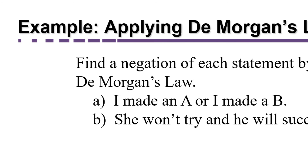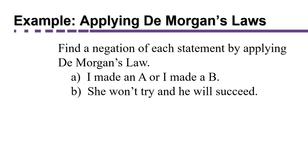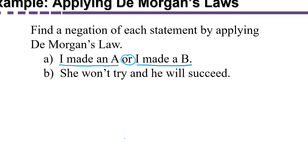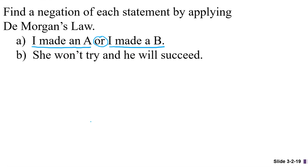So in a way we're not learning something new. We're just rewriting the set theory DeMorgan's laws in logic notation. So let's use DeMorgan's laws of logic to find a negation of each of these statements. The first statement A is: I made an A or I made a B. This statement has two components. The first component is I made an A, the second component is I made a B, and they're joined with the or statement.